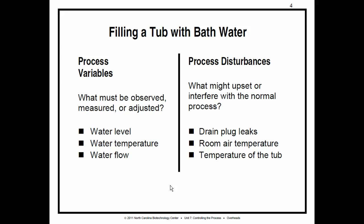Room air temperature, if it's really cold in the room, is going to make the water get colder faster. If it's really hot, then it may keep the water warmer longer. It depends on what you're trying to do. And then, of course, the temperature of the tub itself is going to affect the temperature of the water in it as well, because it is the vessel that is containing this temperature.